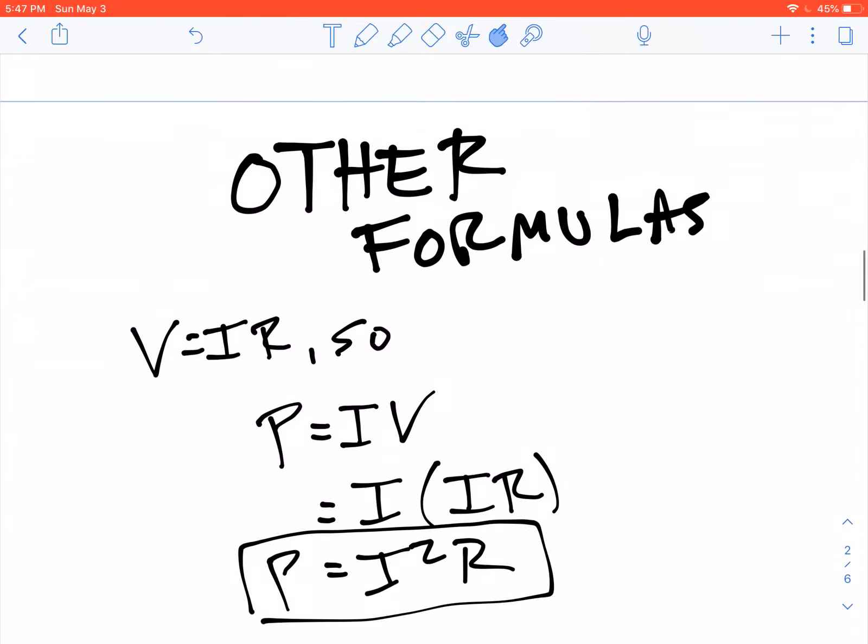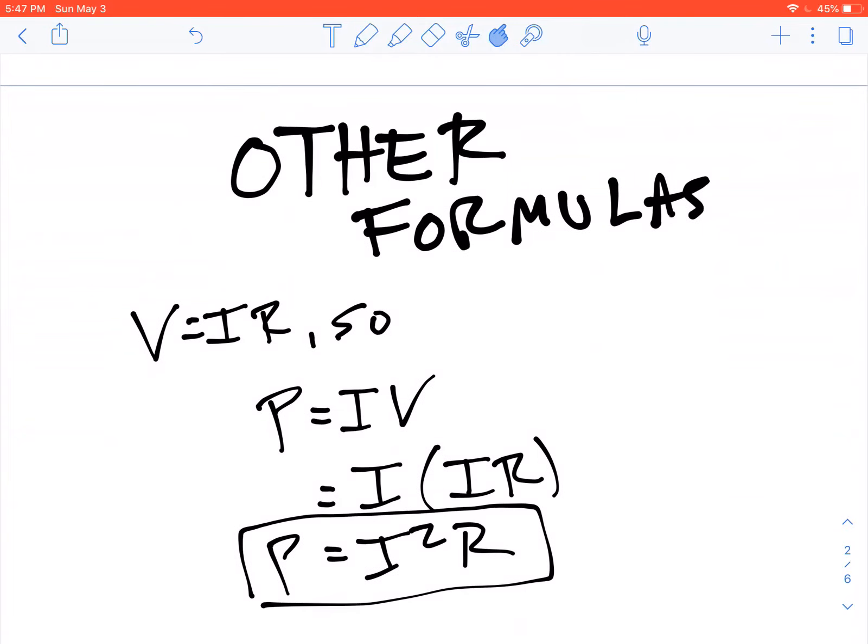There are a few other formulas that are related to this, just rearrangements of the formulas that we have. We know, for example, that V equals IR, so we can take the P equals IV formula and substitute in IR for V. When we do that, we get a slightly modified version of the formula P equals I squared R. This would be useful if, for example, we had current and resistance and wanted power instead of current and voltage.